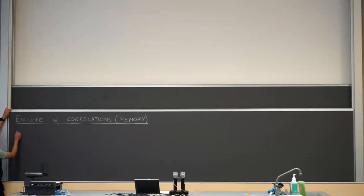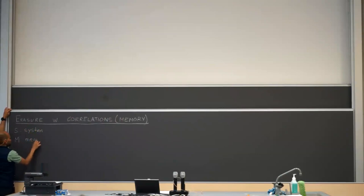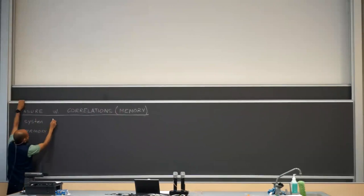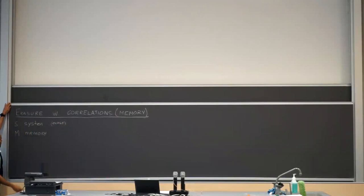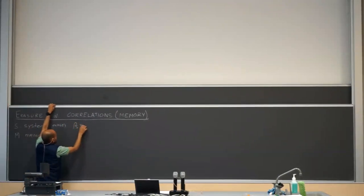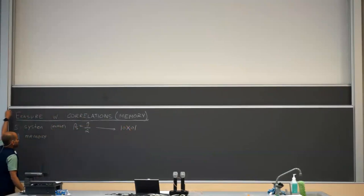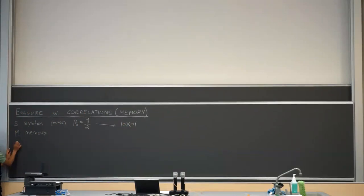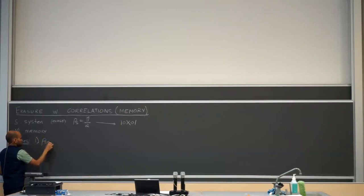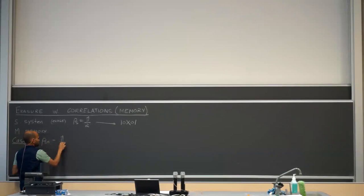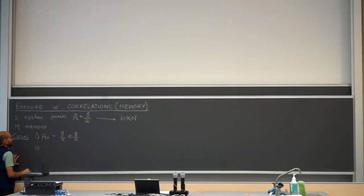Here's our setting. We have our system S and then we have M, which I call the memory. S is what we really want to erase. I'm going to consider three cases. In every case, rho_S is identity over two, and we really want to take it to the pure state |0⟩. There are no Hamiltonians in this example — all systems are degenerate. There's no energy involved, other than the energy of the bath.